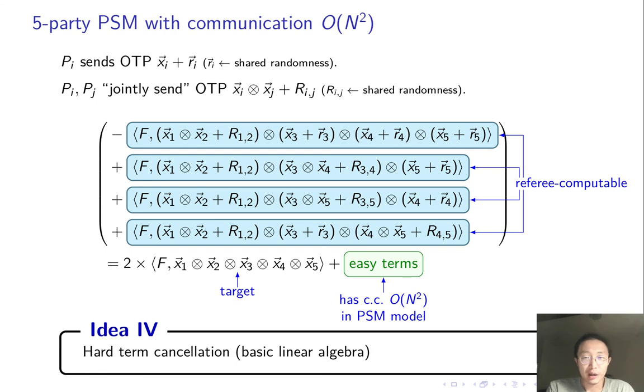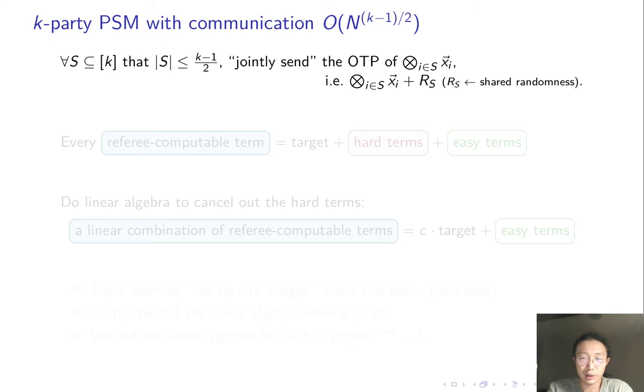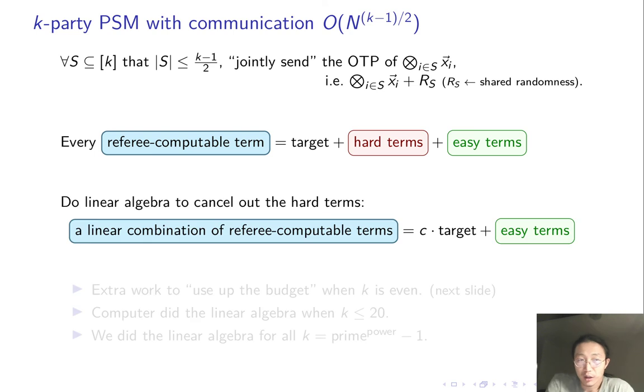So this tells us how to construct the five-party PSM with n-square communication. Note that the target is multiplied by 2, so we have to use a finite field where 2 is not equal to 0. For general k-party PSM, the ideas are the same. First, send one time pad of every tensor product of some input vectors as long as the budget allows. Then there are many terms that the referee can compute. Each of them equals the target plus some hard terms plus some easy terms. Then do linear algebra to cancel out the hard terms, which tells us how to construct k-party PSM within the communication budget.